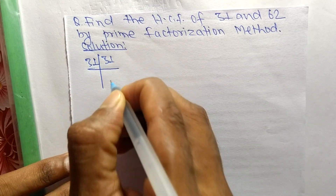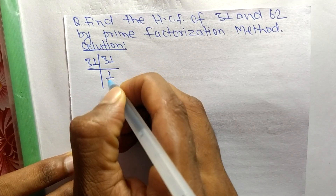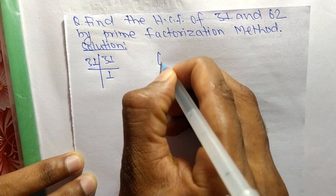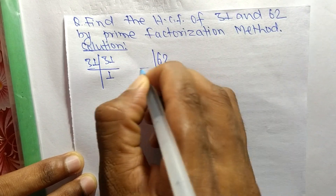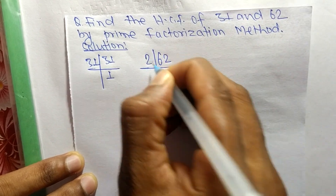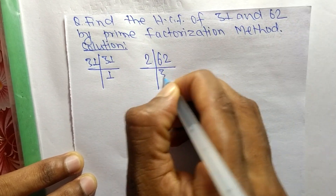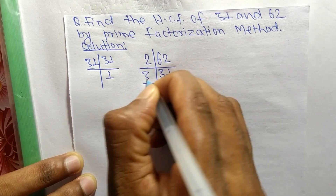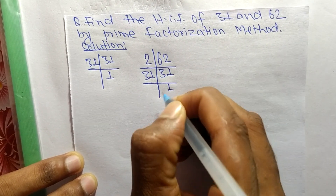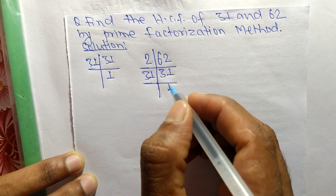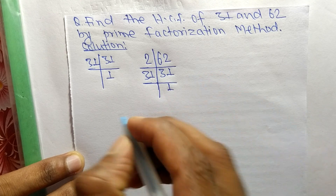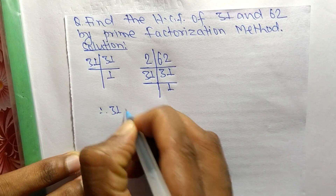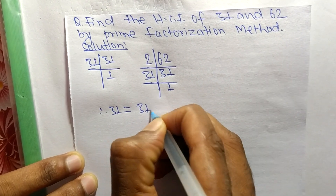The prime factors of 31 are 31 times 1, equal to 31. The prime factors of 62 are 2 times 31, equal to 62, and 31 times 1, equal to 31.